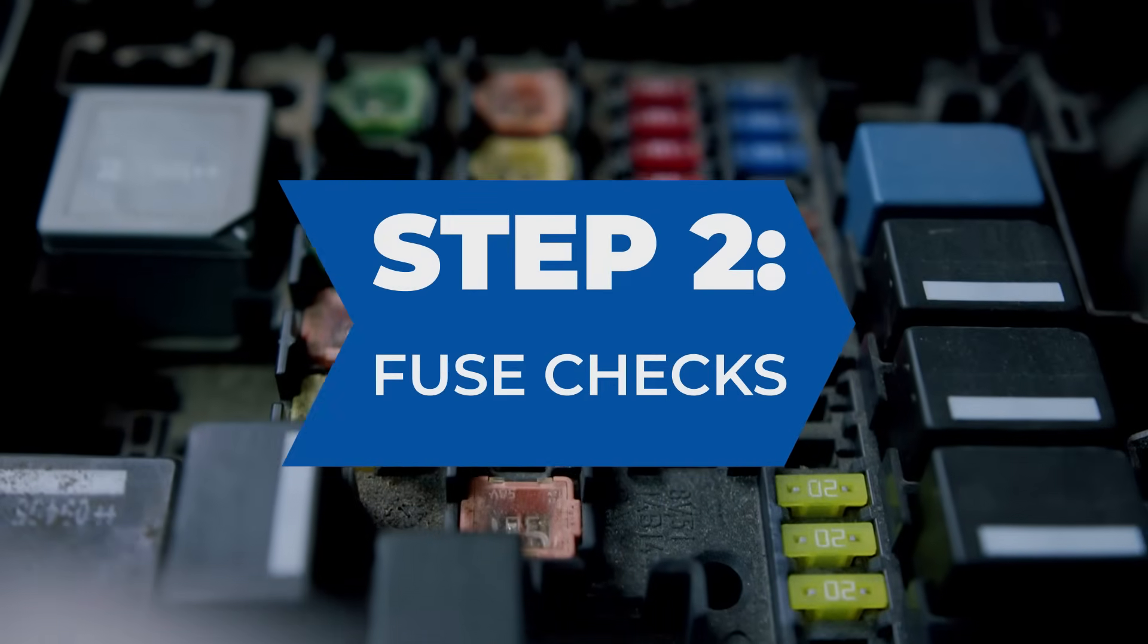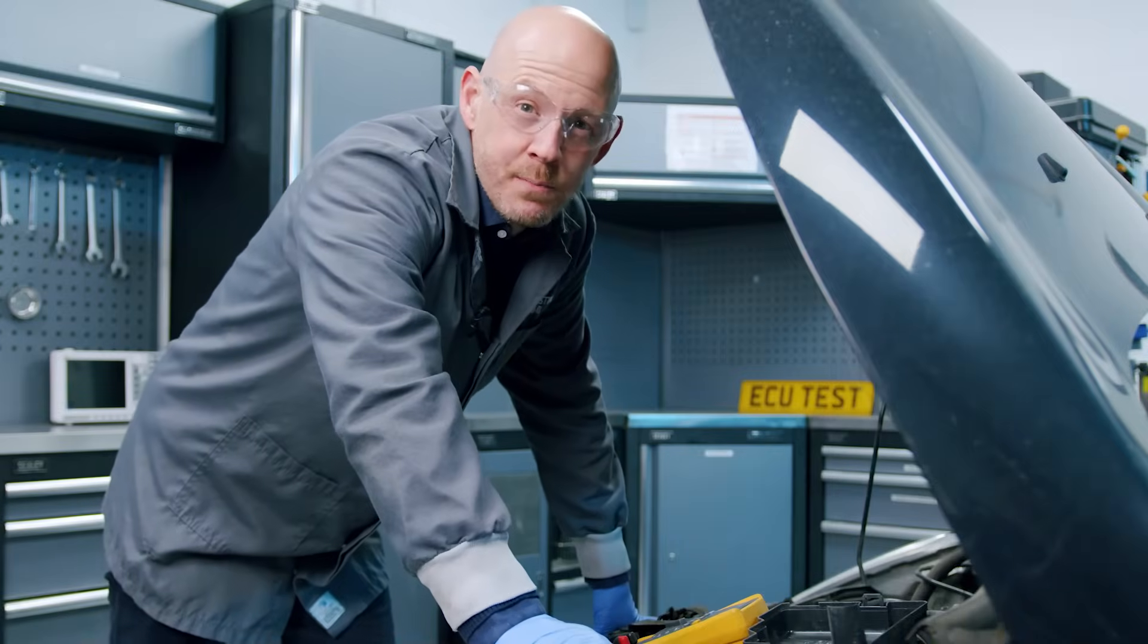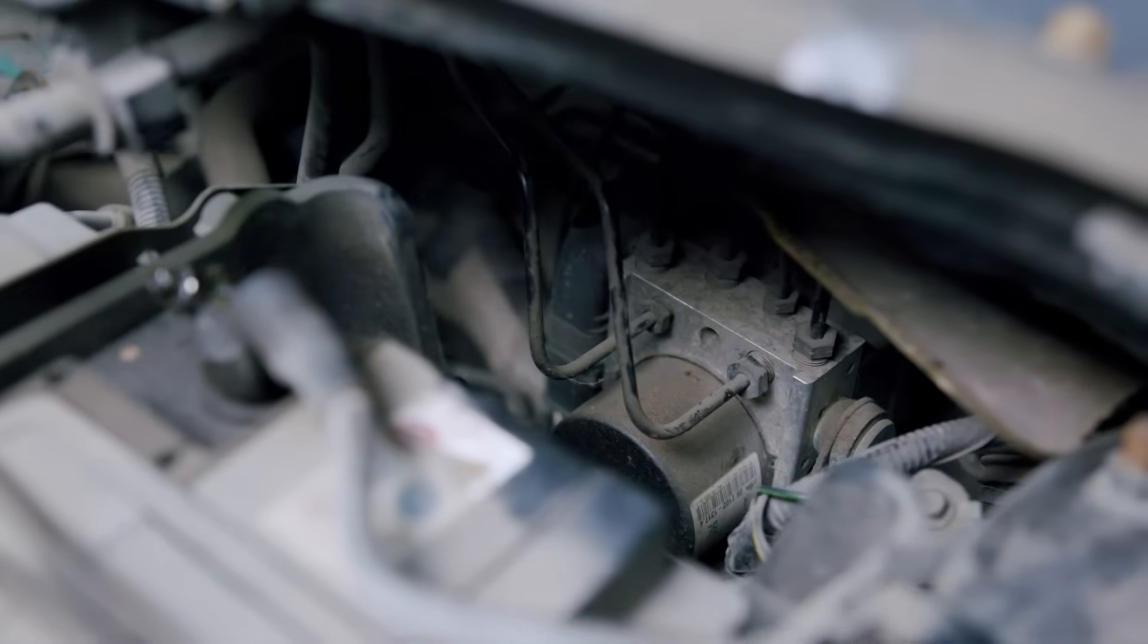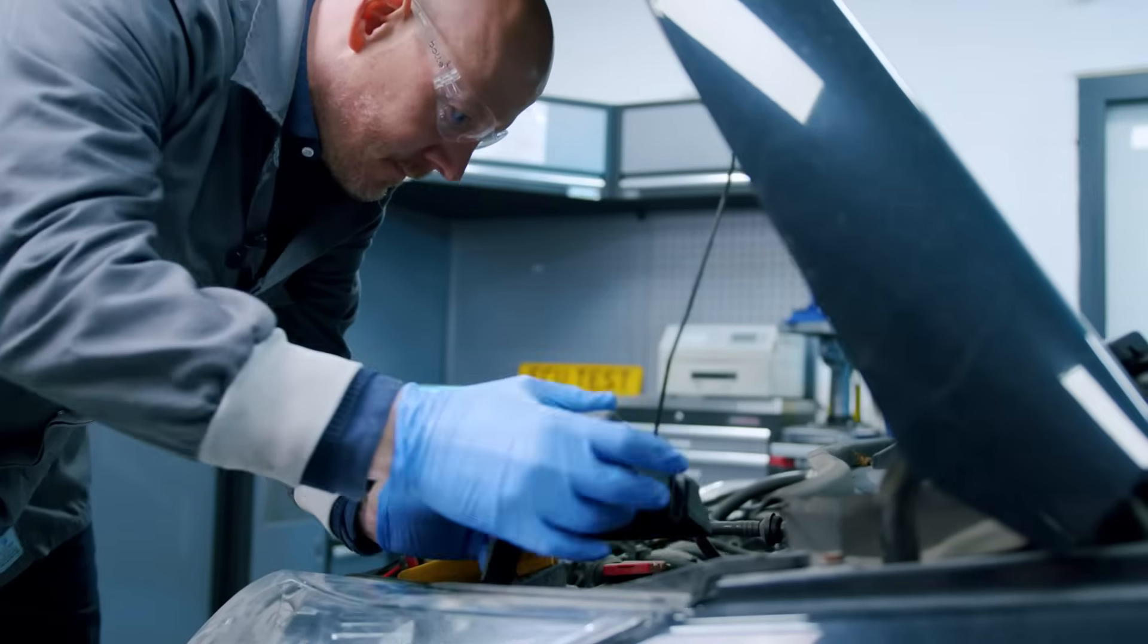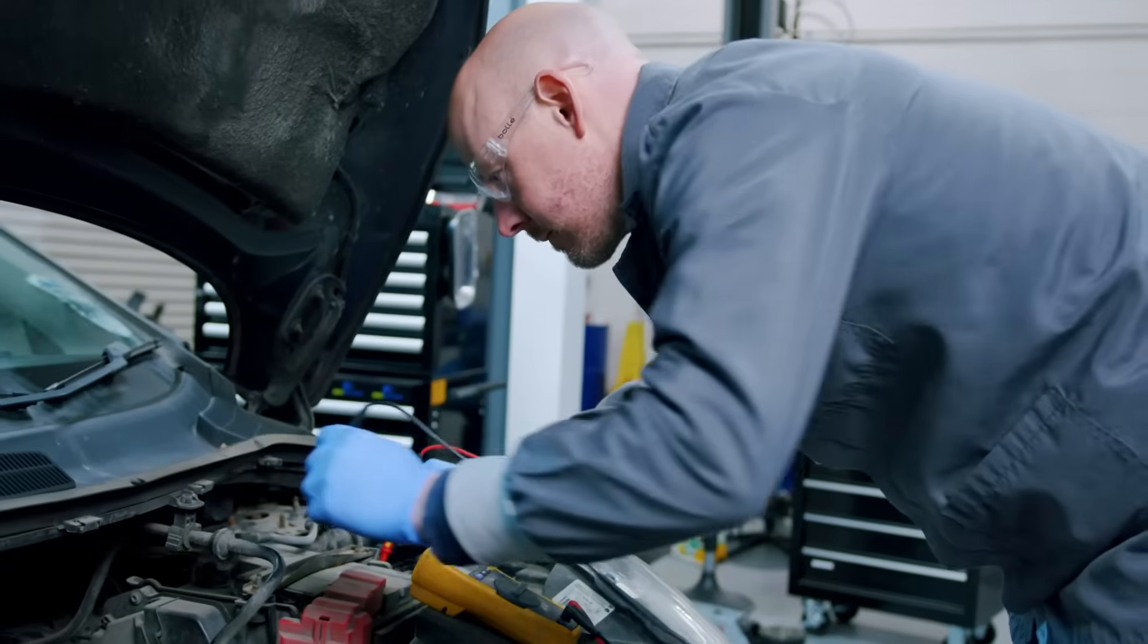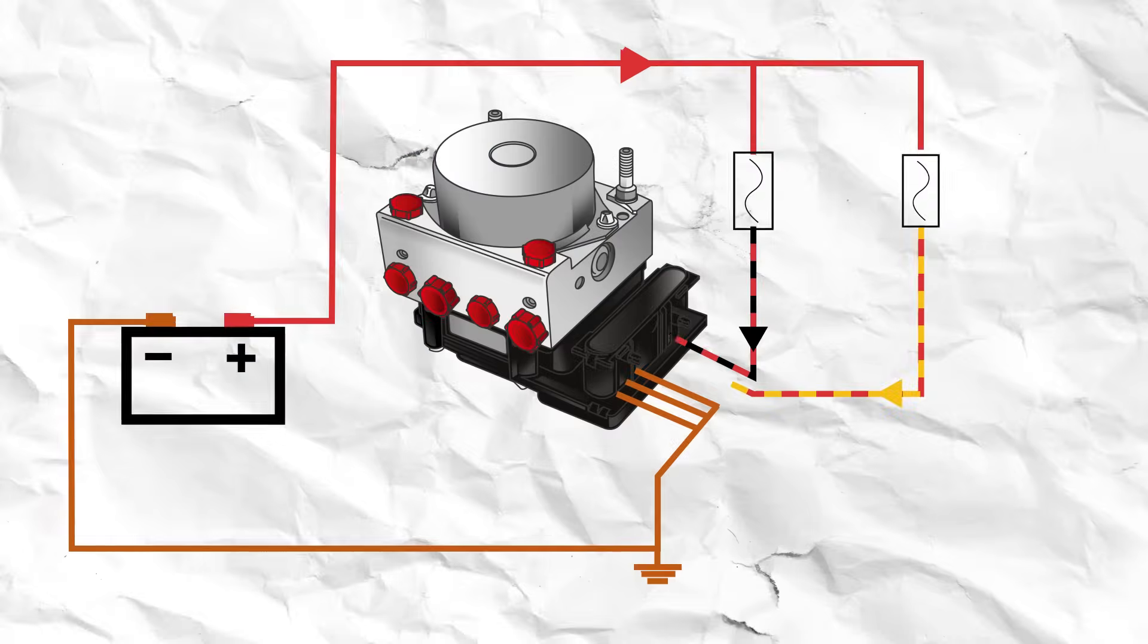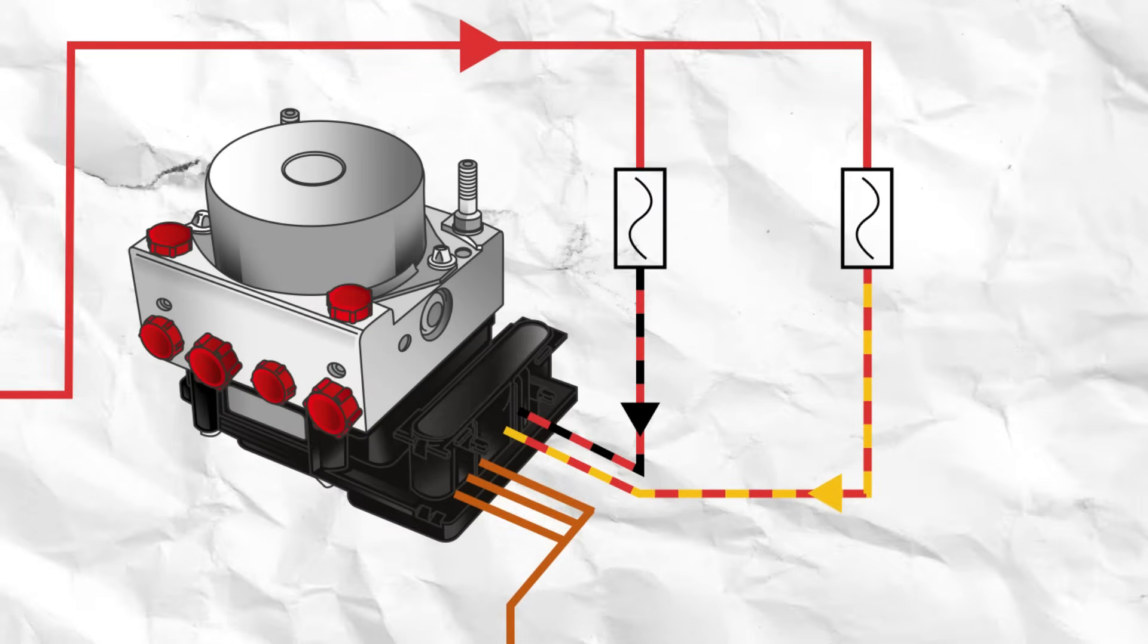Step two. Often overlooked issues are wiring and supply voltage problems to the ABS pump itself. Firstly, check the fuses to make sure that they have not blown or have been damaged. Most modern vehicles will have two fuses for the ABS.